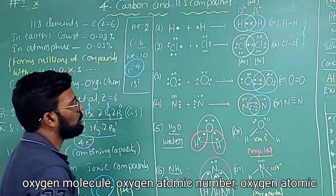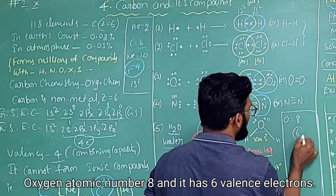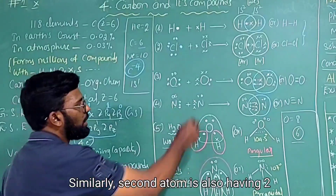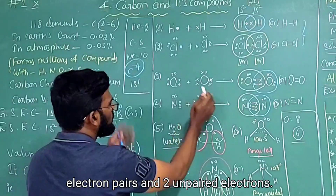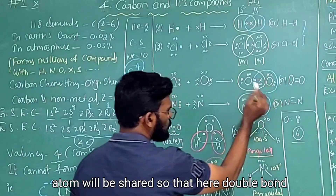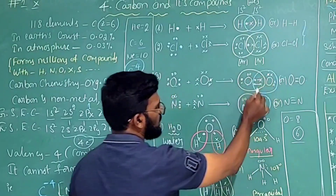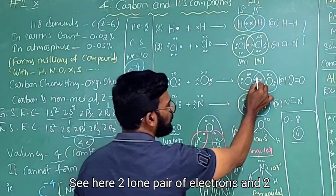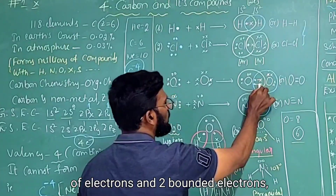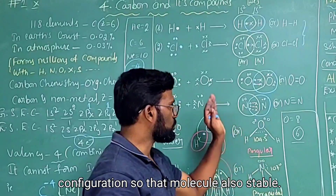For the oxygen molecule, O₂: oxygen has atomic number 8 and six valence electrons — two lone pairs and two unpaired electrons. When two oxygen atoms come close, both unpaired electrons of each atom are shared, forming a double bond between the two oxygen atoms. Each oxygen atom then has two lone pairs and two bonded pairs — four pairs totalling eight electrons — achieving octet configuration, so the molecule is stable.